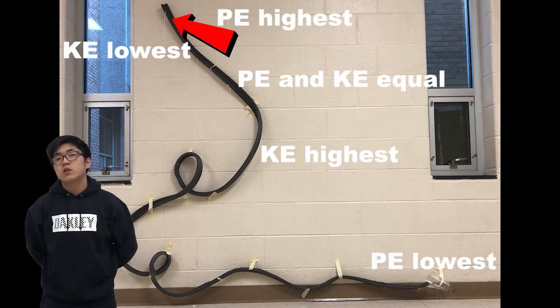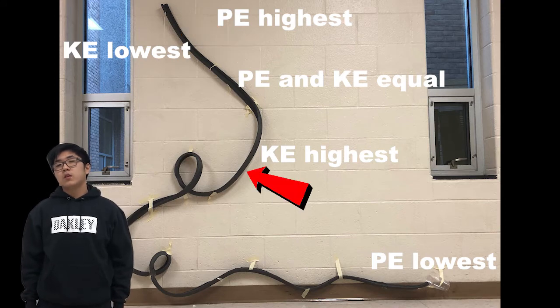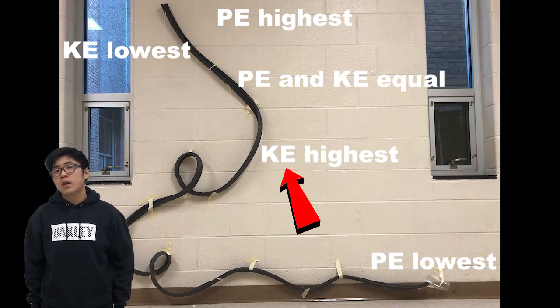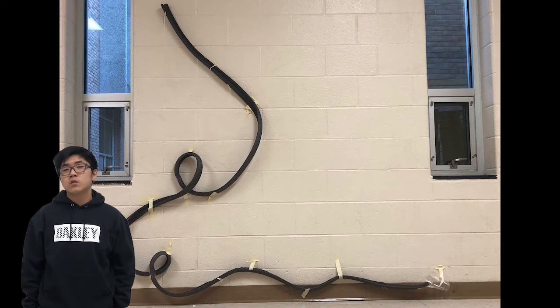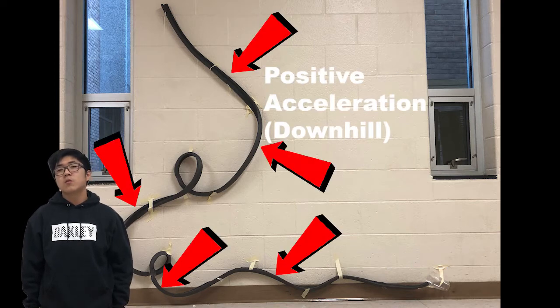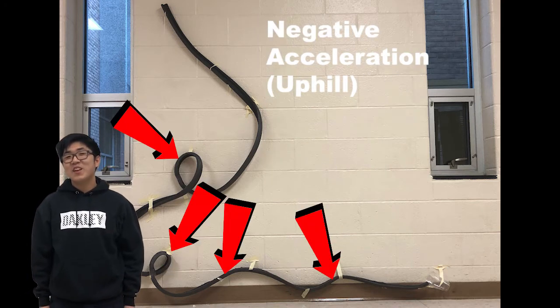At the start, the potential energy is the highest and the kinetic energy is the lowest. At this point, the kinetic energy is the highest and at the end, the potential energy is the lowest. These points have a positive acceleration and these points have a negative acceleration.